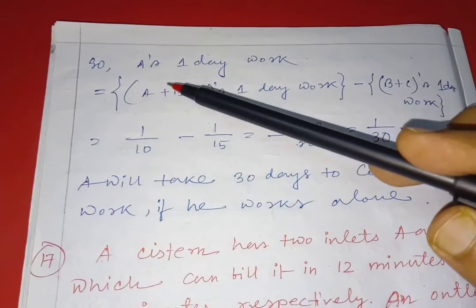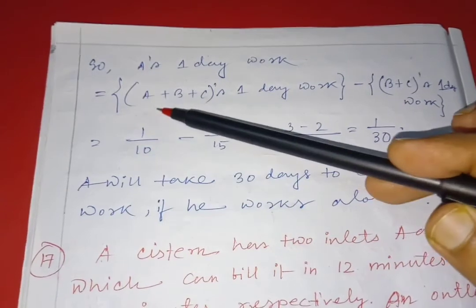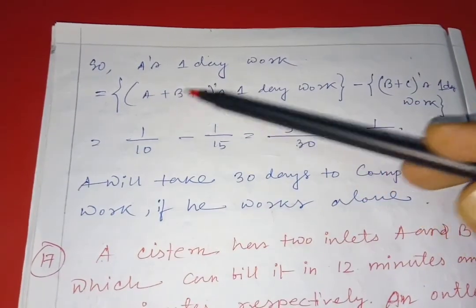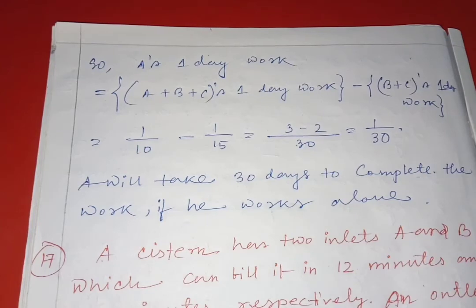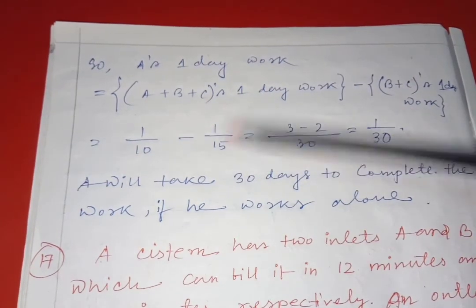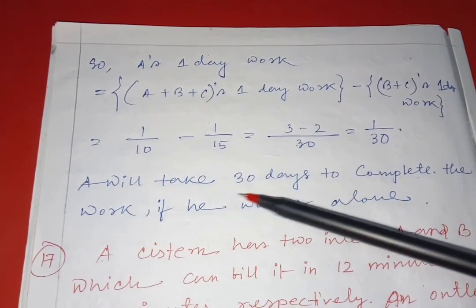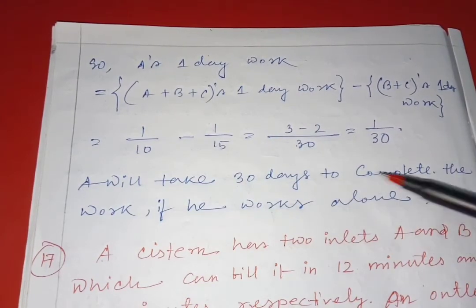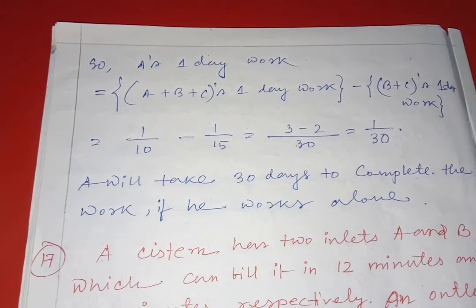Afterwards, we need to find A's one day work, which equals A plus B plus C's one day work minus B plus C's one day work, leaving only A. This is 1 by 10 minus 1 by 15, as mentioned in the question, which gives 3 minus 2 by 30, equal to 1 by 30. So A will take 30 days to complete the work if he works alone. Very easy problem, but it will take some time — so practice very much.